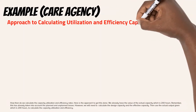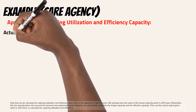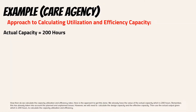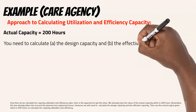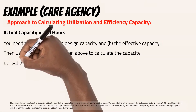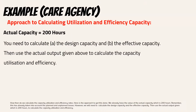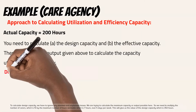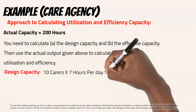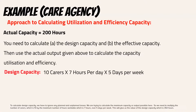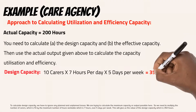How then do we calculate the capacity utilization and efficiency rates? We already have the value of the actual capacity, which is 200 hours — this has already taken into account the planned and unplanned losses. However, we will need to calculate the design capacity and the effective capacity, then use the actual output of 200 hours to calculate utilization and efficiency. To calculate design capacity, we ignore any planned and unplanned losses. We multiply the number of carers (10) by the maximum hours workable (7 hours) over 5 days per week. This gives us a design capacity of 350 hours.